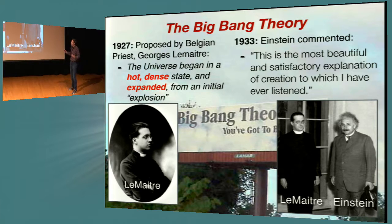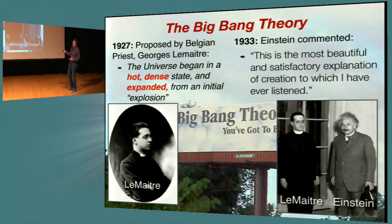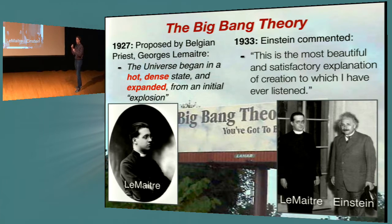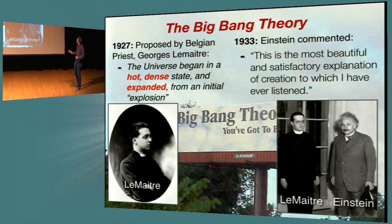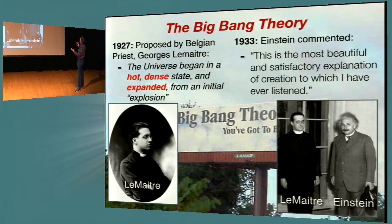It's easy to forget how long the Big Bang theory has really existed. It was proposed, somewhat ironically, by a Belgian priest, George Lemaitre, in 1927. The Big Bang theory itself is just saying that the universe began in a very hot, dense state, and then expanded from some initial explosion. Even six years later, Albert Einstein said of the Big Bang theory, 'This is the most beautiful and satisfactory explanation of creation to which I have ever listened.' So Einstein was convinced only six years after it was proposed.